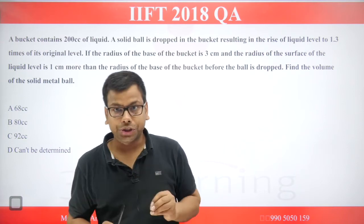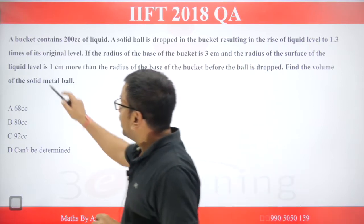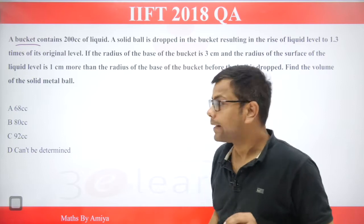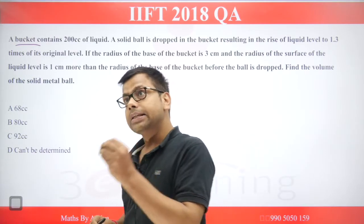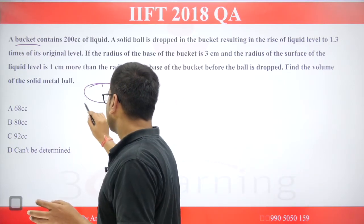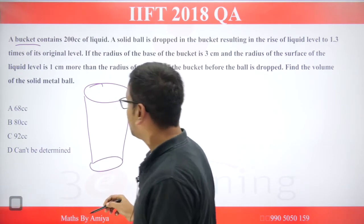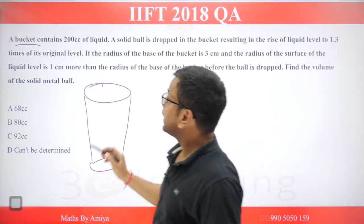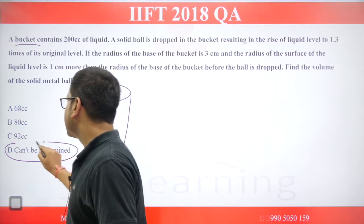This question is about mensuration. First we will understand the question and then solve it. A bucket — they should tell us the shape of the bucket. It is pre-assumed that if the shape of the bucket is not known, then it becomes the shape of a frustum. But the answer could be 'cannot be determined' if we assume ourselves without being told.